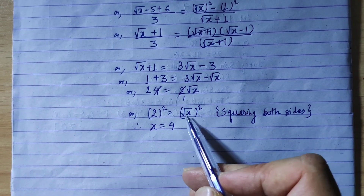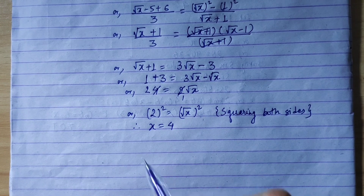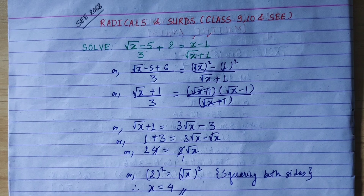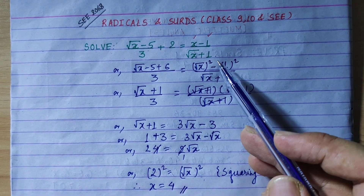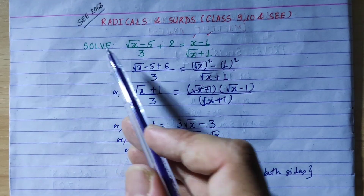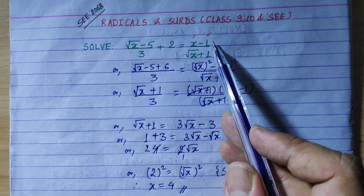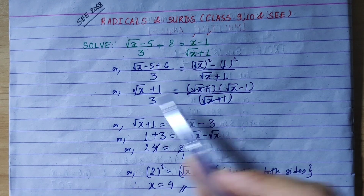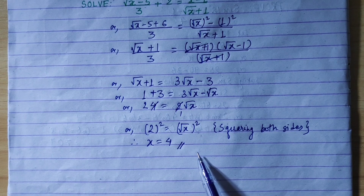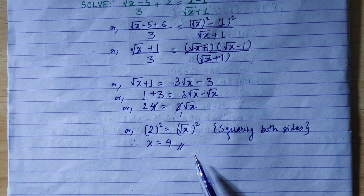To remove the root we squared both sides, so we need to do a checking. Our answer is x equals 4. From this question you can easily solve this type of problem. Remember, what appears on the right-hand side can also appear on the left-hand side. Apply the a² minus b² formula first, then cross multiply, and finally square both sides to get the answer.